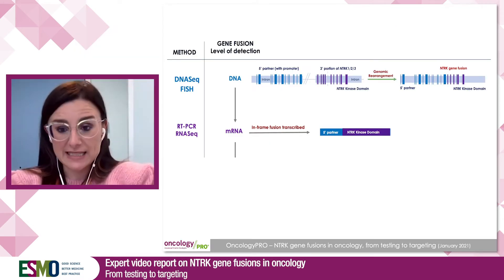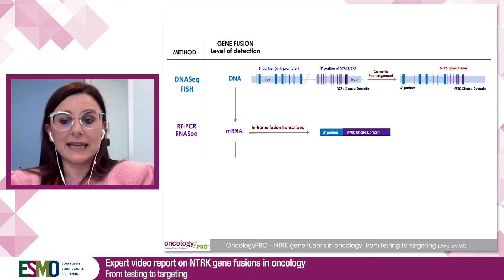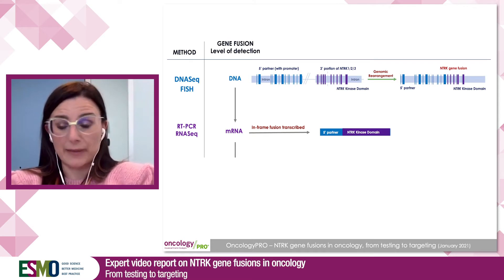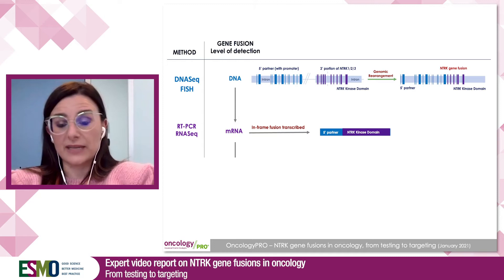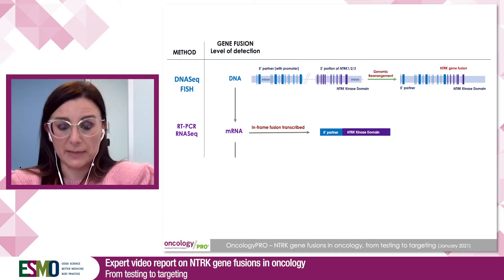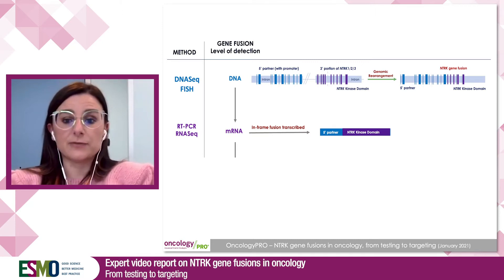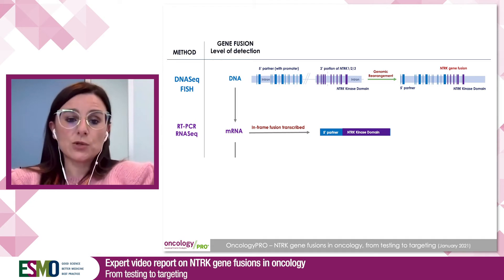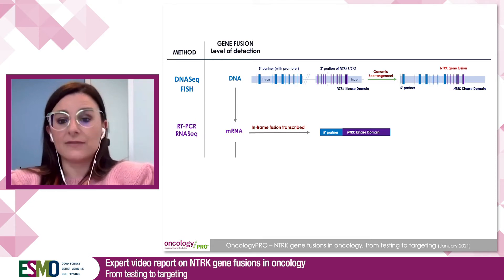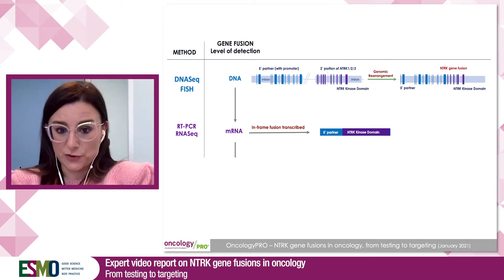When approaching NTRK gene fusion testing in the diagnostic setting, we have different options. On one side, we may use in vitro nucleic acid-based assays — mainly DNA or RNA-based next-generation sequencing panels. If we handle NTRK gene fusion testing with a DNA-based panel, we look for a genetic rearrangement but would not have information on the expression of the chimeric gene. This information can be gathered using an RNA-based panel, and we know from the literature that RNA-based panels have higher sensitivity in detecting NTRK gene fusions.